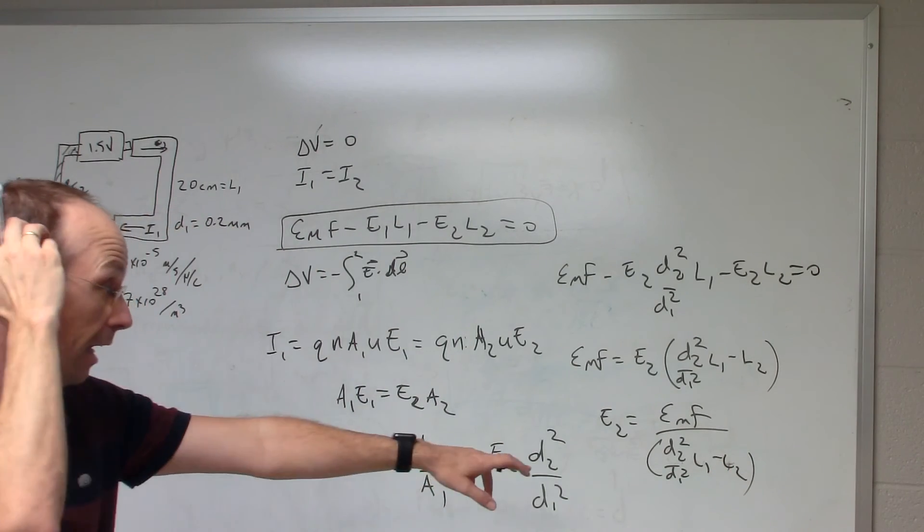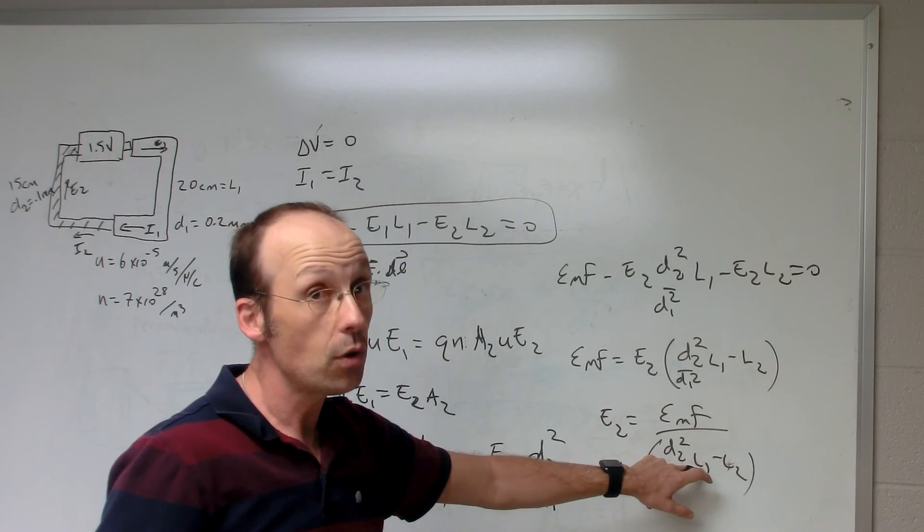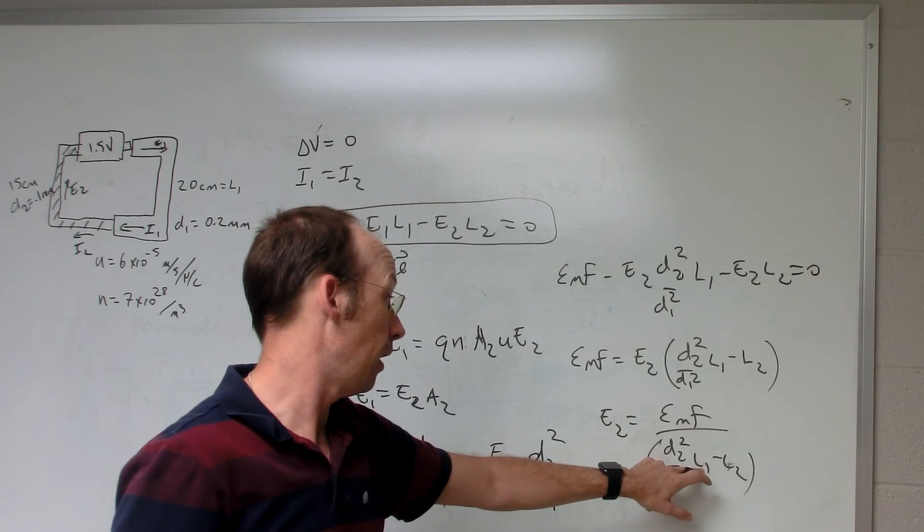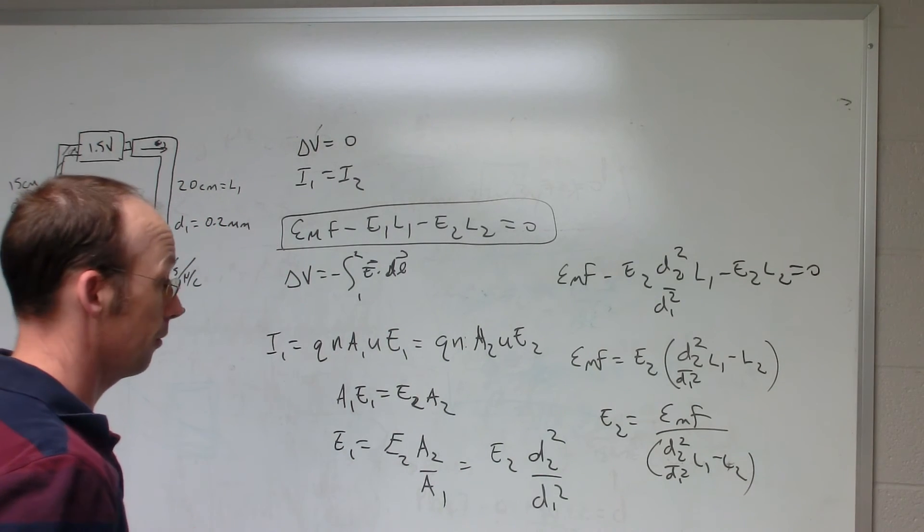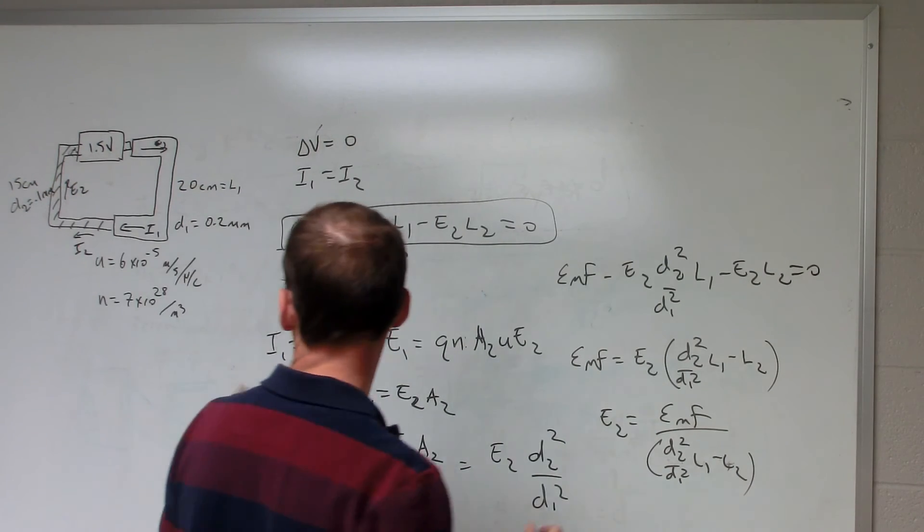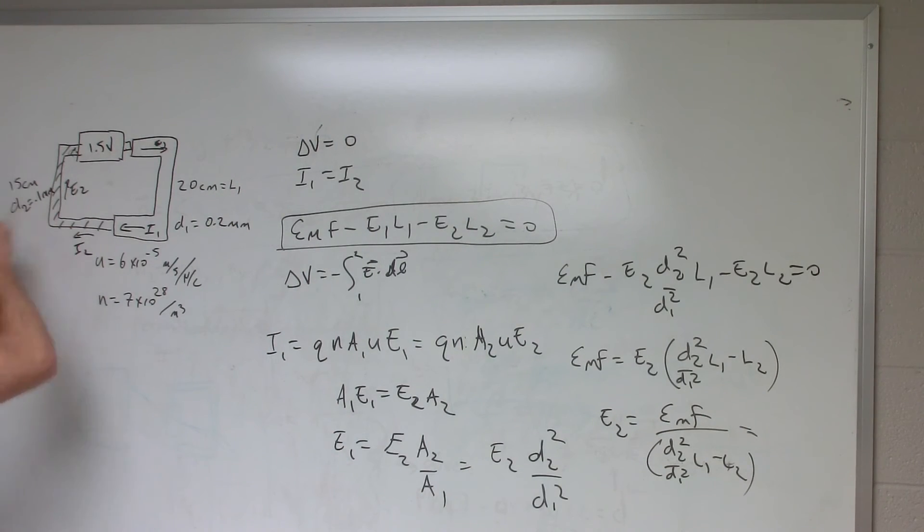Now that is 1.5 volts. I know the diameters and the length. Now that one I do have to have in meters. And this is giving it in centimeters. Okay, so let me go ahead and plug my values. So here I have L1 is 20 centimeters, L2 is 15, D1 is 0.1 millimeter, D2 is 0.2 millimeters.